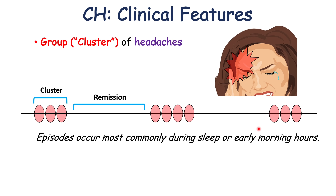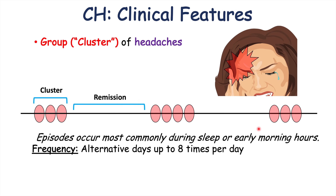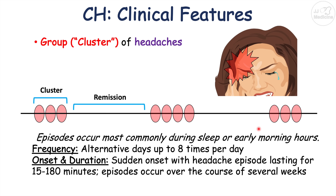These episodes often occur most commonly during sleep or early morning hours, though some patients have them in the late evening. That is why the biological clock of the hypothalamus may be involved. During a cluster period, attacks can occur anywhere from one every other day to eight times per day. Onset is often sudden, peaking within 10 to 15 minutes, with duration lasting 15 to 180 minutes.